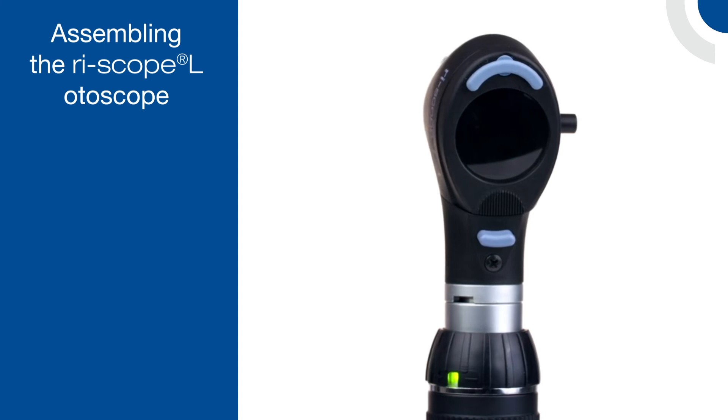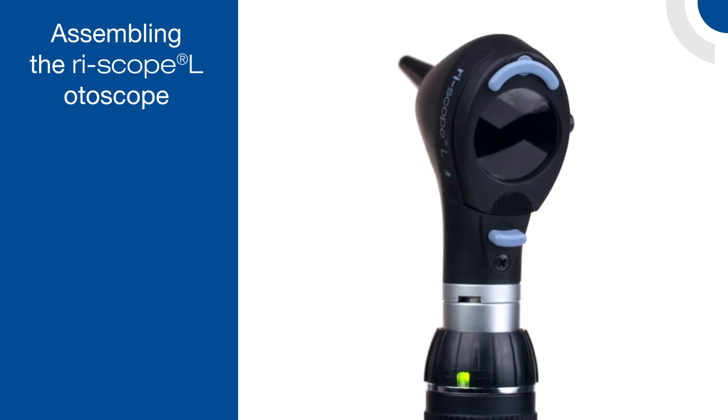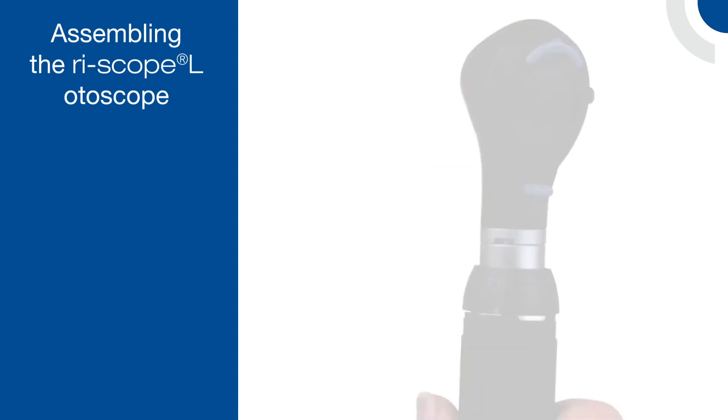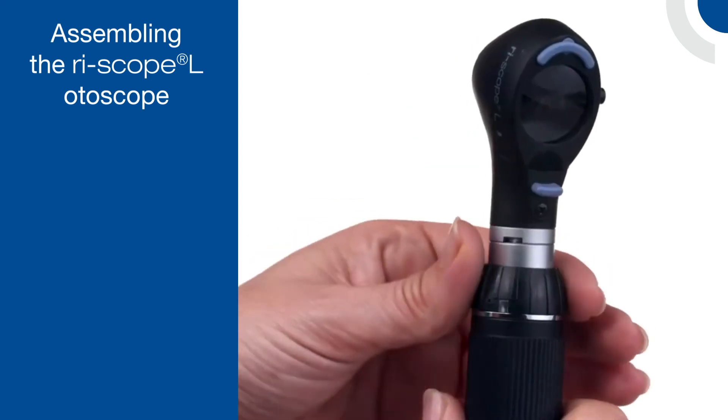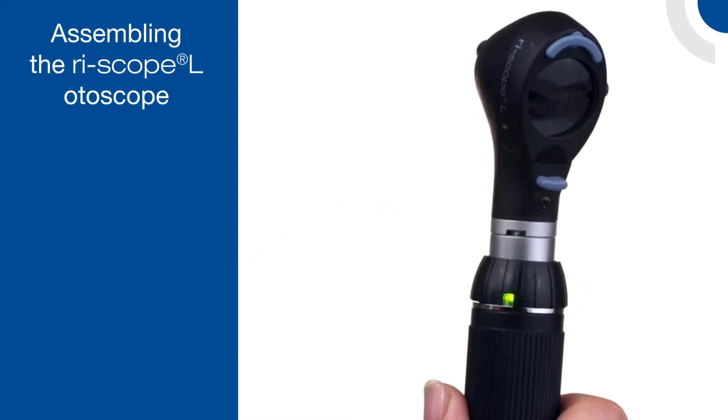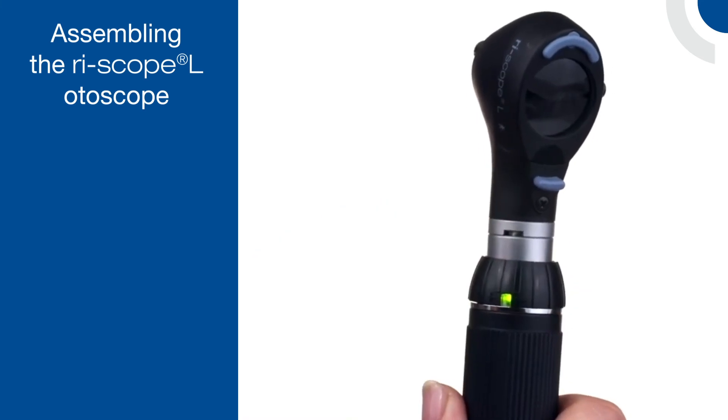Once you have attached the Rescope-L otoscope head and inserted the proper battery, your device is now ready for use. To turn it on, twist the black collar on the top of the handle clockwise.